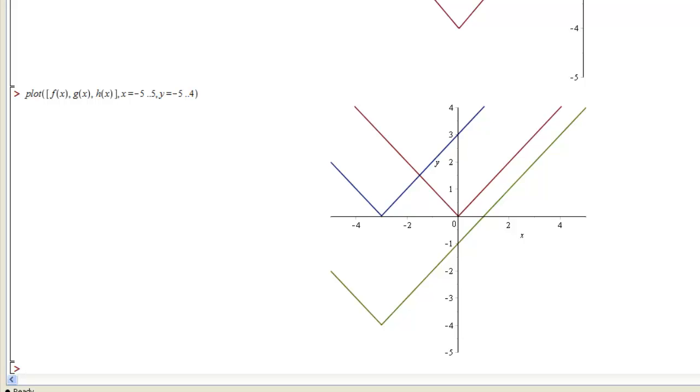And this gives us all three of our functions. Our original absolute value is there in red, then in blue we have our g of x, which was 3 to the left, and then in green we have our h of x, which was 3 to the left and then 4 down.